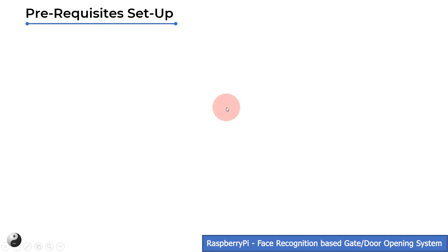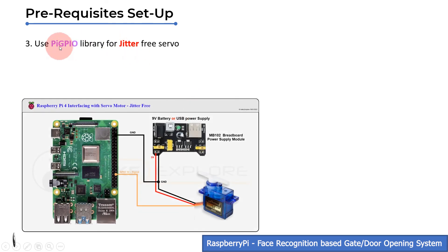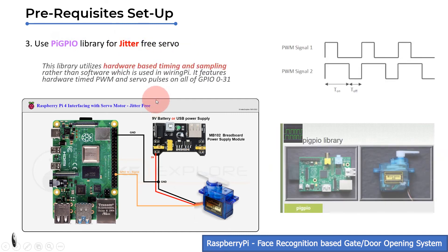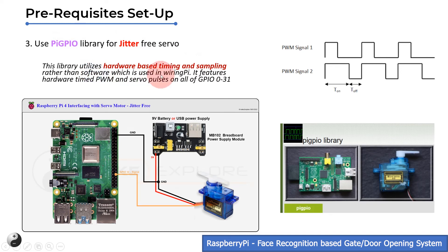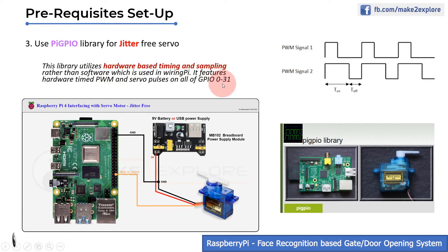For the servo motor, to avoid jittering effects, use the PiGPIO library. This library utilizes hardware-based timing and sampling rather than software, which is used in the WiringPi library. It features hardware-timed PWM and servo pulses on all GPIO 0 through 31. This is all about the software and hardware setup of this project.